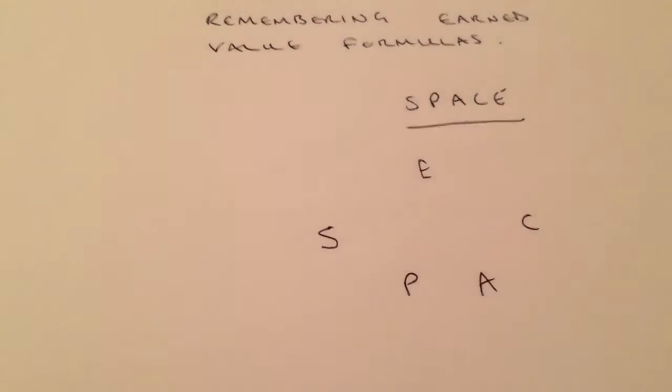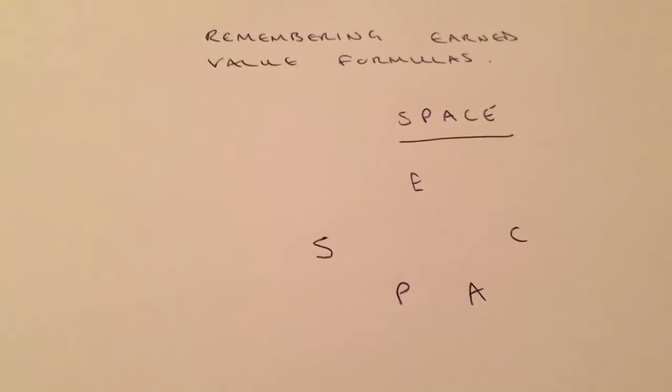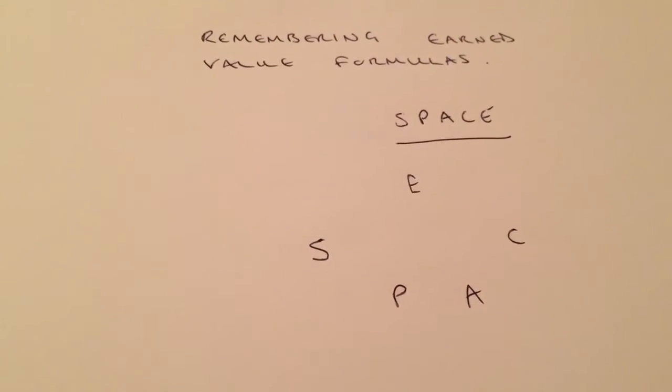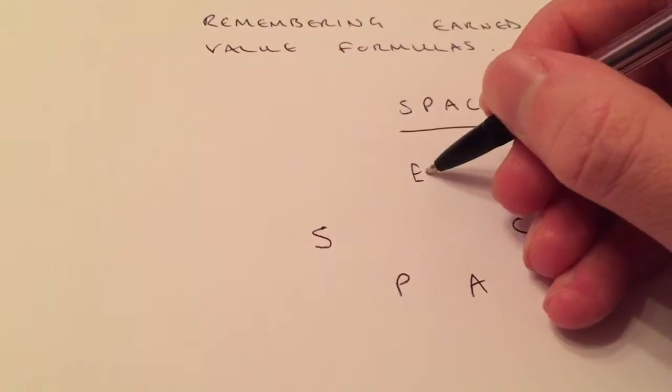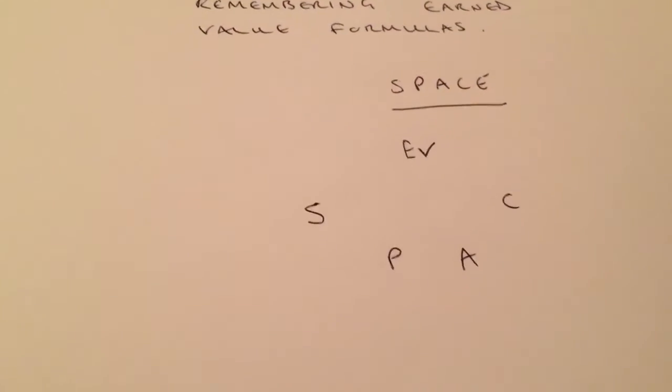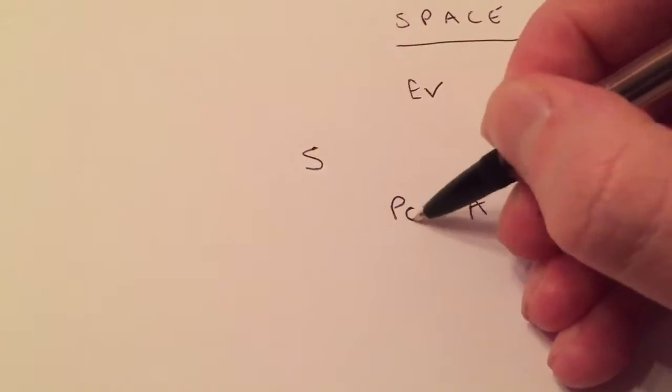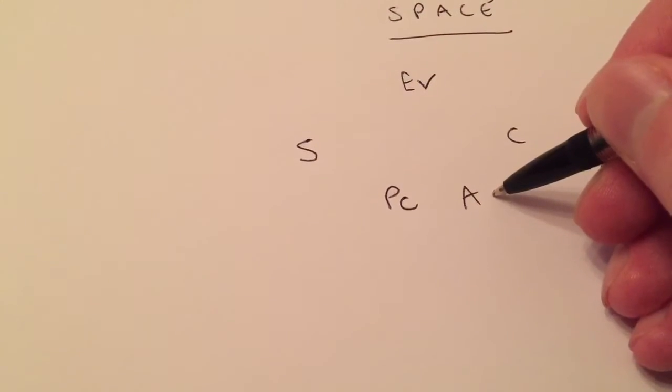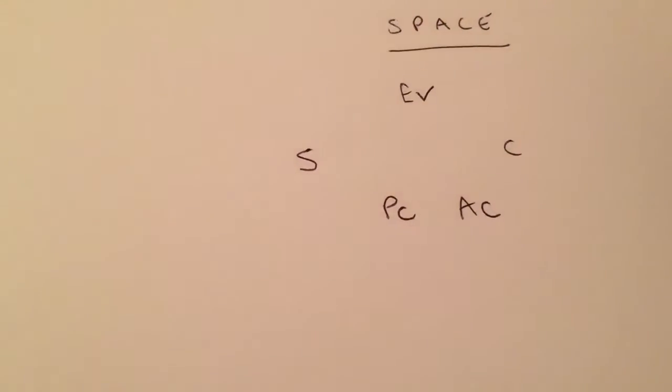Now from SPACE you can work out all of the formulas fairly easily. So E is earn value, P is planned cost, A is actual cost. So then it's quite obvious that S is schedule and C is cost.